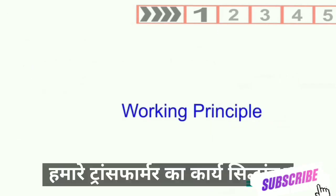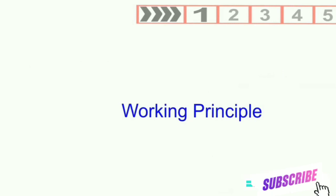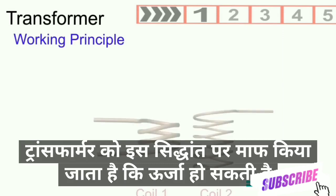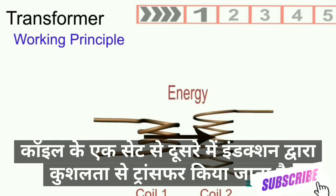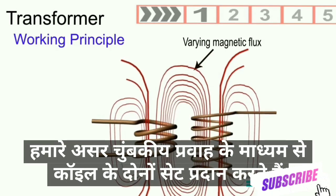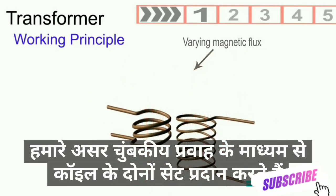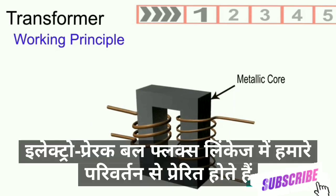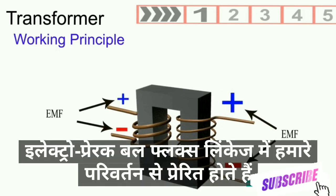Working principle of a transformer: the transformer is based on the principle that energy may be efficiently transferred by induction from one set of coils to another by means of a varying magnetic flux, provided that both sets of coils are on a common magnetic circuit. Electromotive forces are induced by a change in flux linkage.